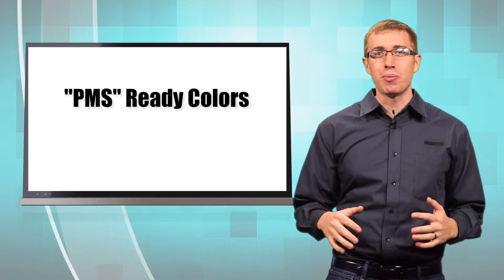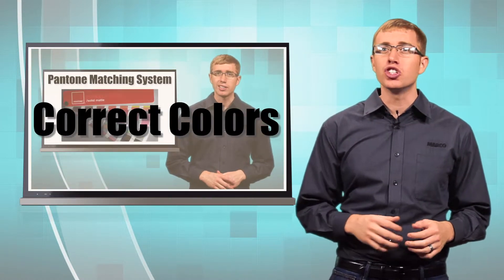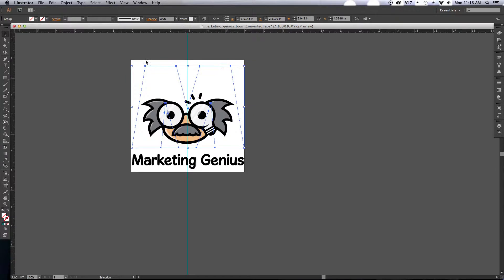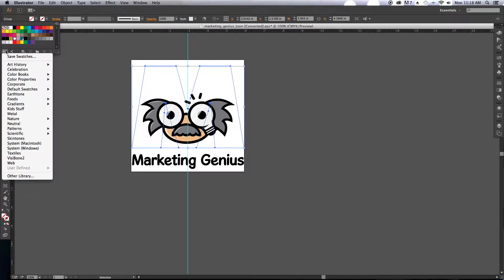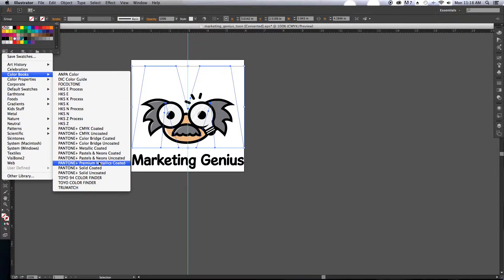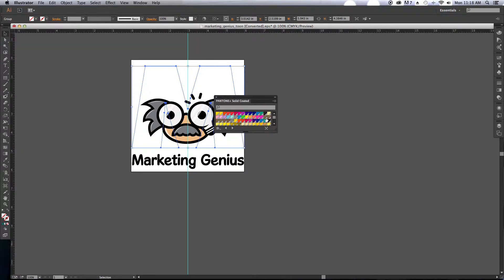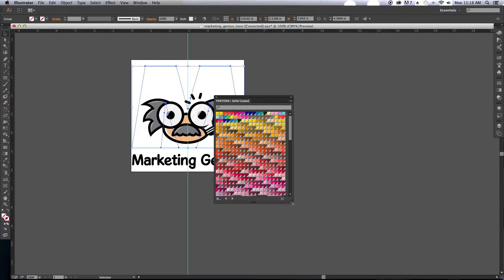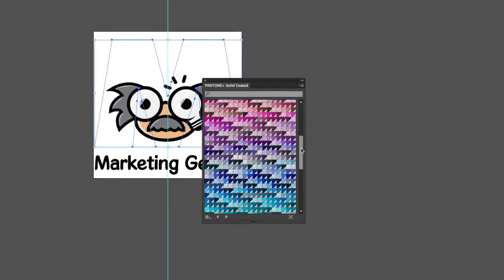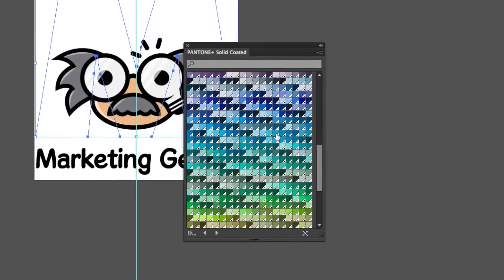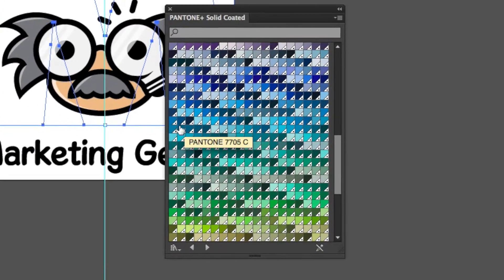Next, you're going to need to make your colors PMS ready. If you don't know what PMS colors are, just watch our video about using correct colors. Check to see that there is a corresponding PMS number for your current color in your program of choice. Then just send that number with your artwork file. If there is no number associated with it, you're going to need to find the closest PMS color to your desired color. Once you have the desired color, just send the PMS number with your file.